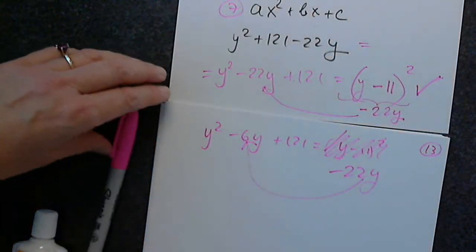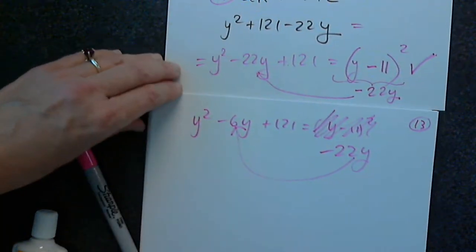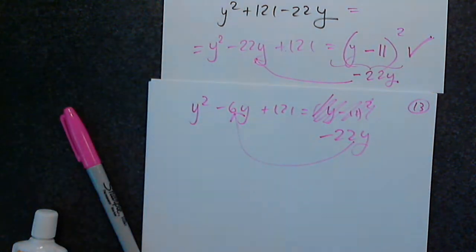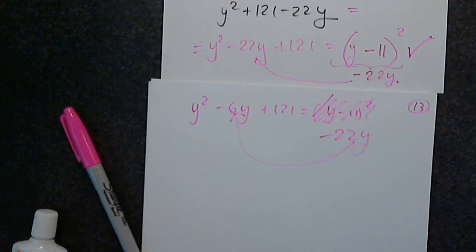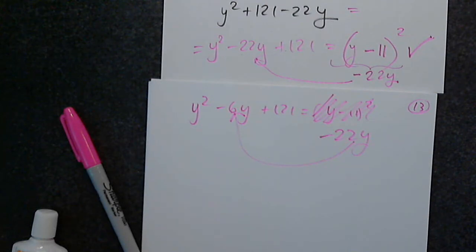Notice: just because the first and last terms are perfect squares doesn't automatically make it a perfect square trinomial. You still have to check the middle term. For example, y² − 6y + 121 would not equal (y − 11)² because the middle term of that expansion is −22y, not −6y. So please remember — always check the middle term.